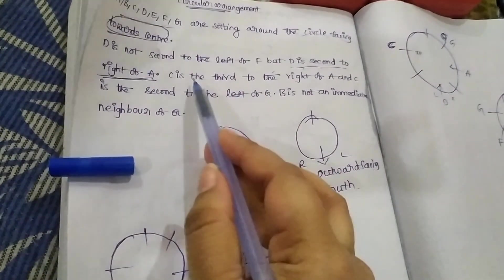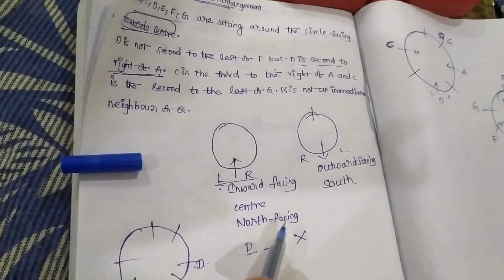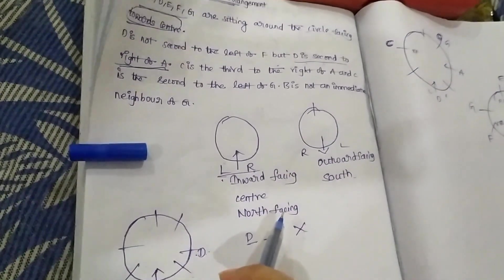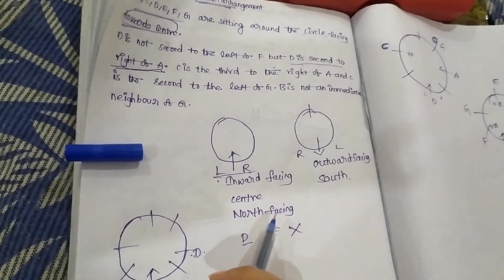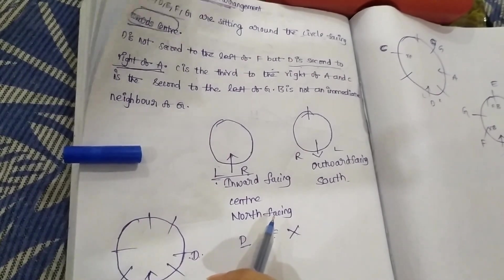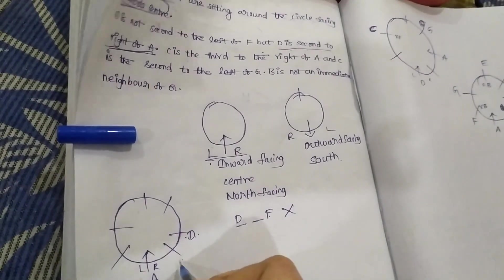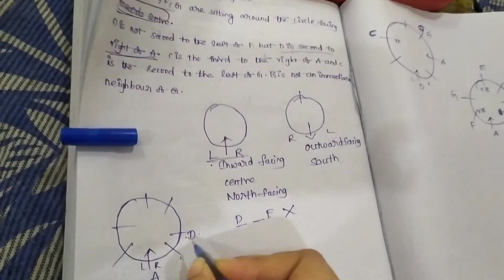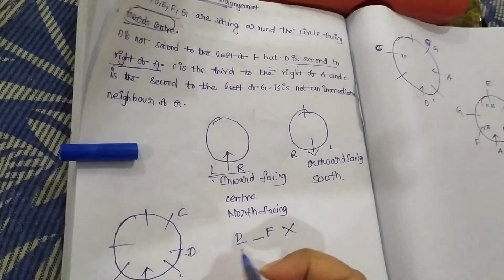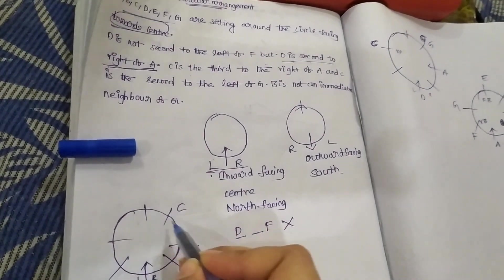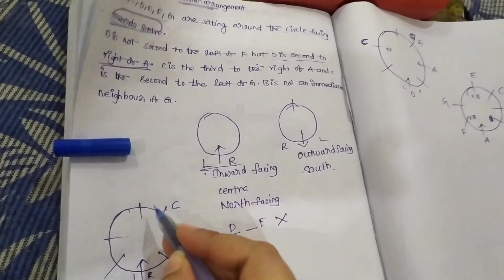The third right of A, and C is the second left of G. G is the second left level. C is the third right of A. A is the third right of C. One, two, three. C is the second left of G. G is the second left. It is not wrong, it is right out here.